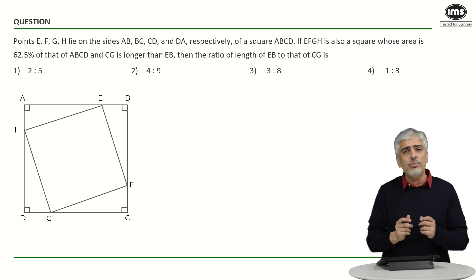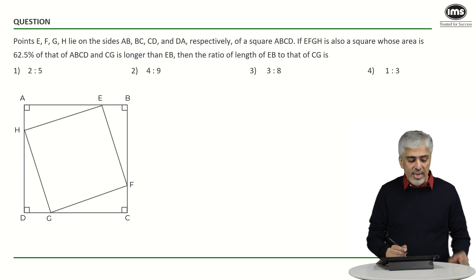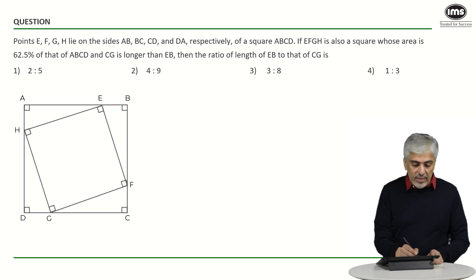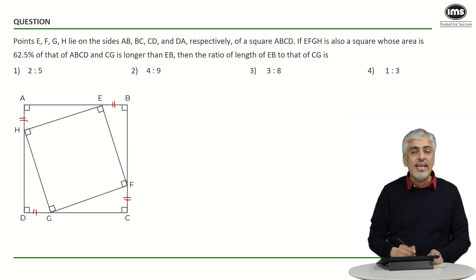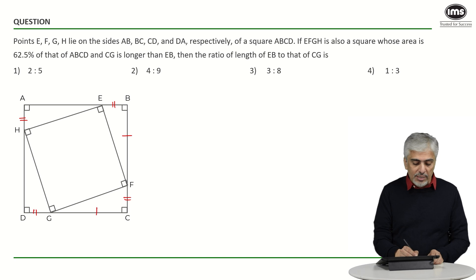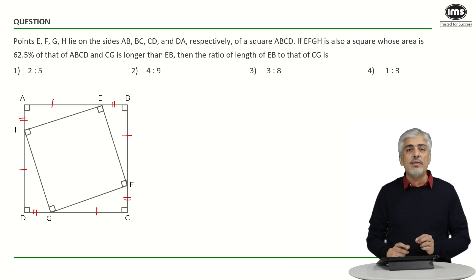Now, for EFGH to be a square, EB will have to equal FC, which will have to equal GD, which will have to equal AH. Similarly, BF will have to equal CG, equal HD, equal AE. That is very, very important. Once you get that, let us try and see what we would do for this question.